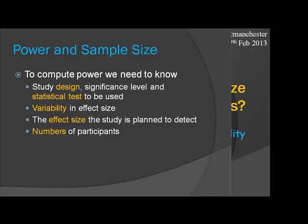To compute the power, you need to know the study design and the test you're going to use, the variability and the effect size. The textbook version is: identify your endpoint, identify your main comparison, estimate your variance, decide on the effect size you want to detect, decide on the power you need, and calculate the sample size.